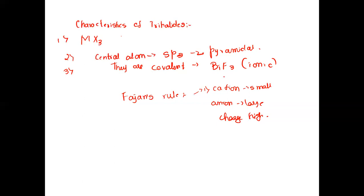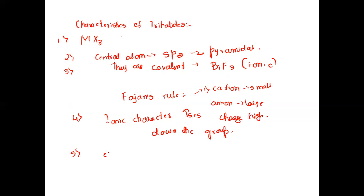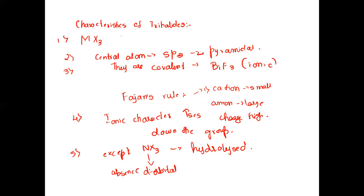All trihalide compounds are covalent except BiF3. Ionic character increases as we go down the group because ionic size increases. All trihalides except nitrogen's trihalide can be easily hydrolyzed. Nitrogen trihalide is not hydrolyzed because of the absence of d-orbitals; d-orbitals are available in the others allowing hydrolysis.